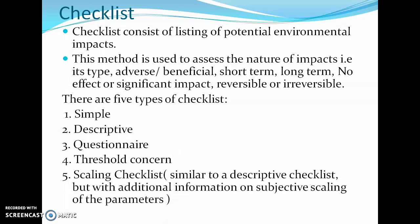First is checklist. Checklist consists of listing of potential environmental impacts. As discussed earlier, there will be various environmental impacts during a development project. Checklist is the first tool used to assess the impact. This method is used to assess the nature of impacts — its type, whether the impact is adverse or beneficial, short term, long term, no effect, significant, reversible, or irreversible.